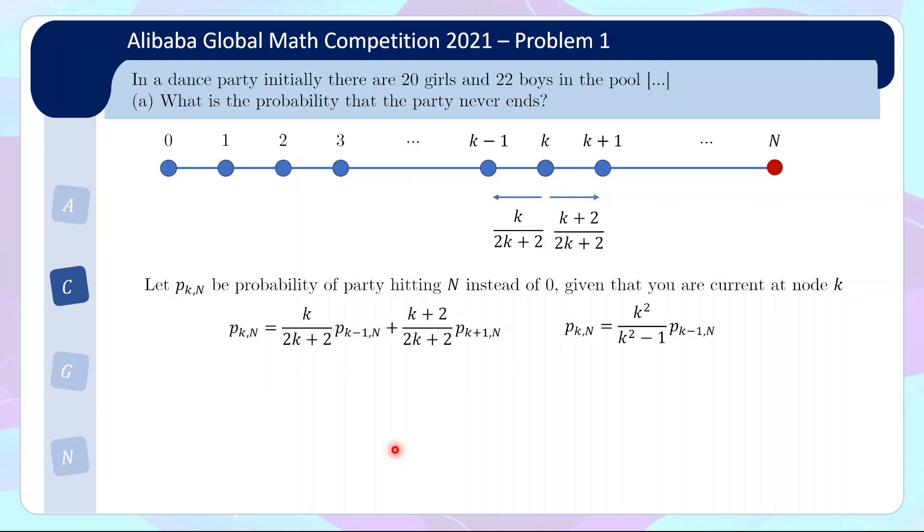So what I have done is I came up with this method of trying to solve for P1 where I imagine that there is an absorbing state. There's a right end to this line, which is at a large integer N. So instead of a semi-infinite line, I'm going to have a very large right end, right wall to this line. And I'm going to write PK over N as the probability of the party hitting N instead of 0. You will first hit N instead of first hit 0 given that you are currently at node K. So hitting N, where N is very far to the right, is sort of the analogy to the party not ending and the walk escapes towards infinity.